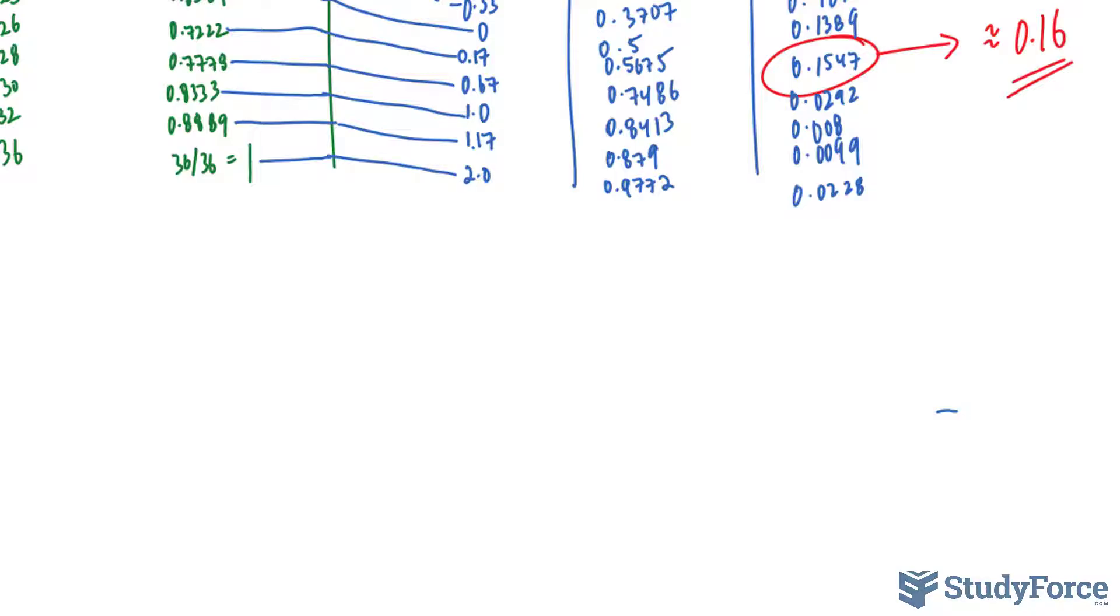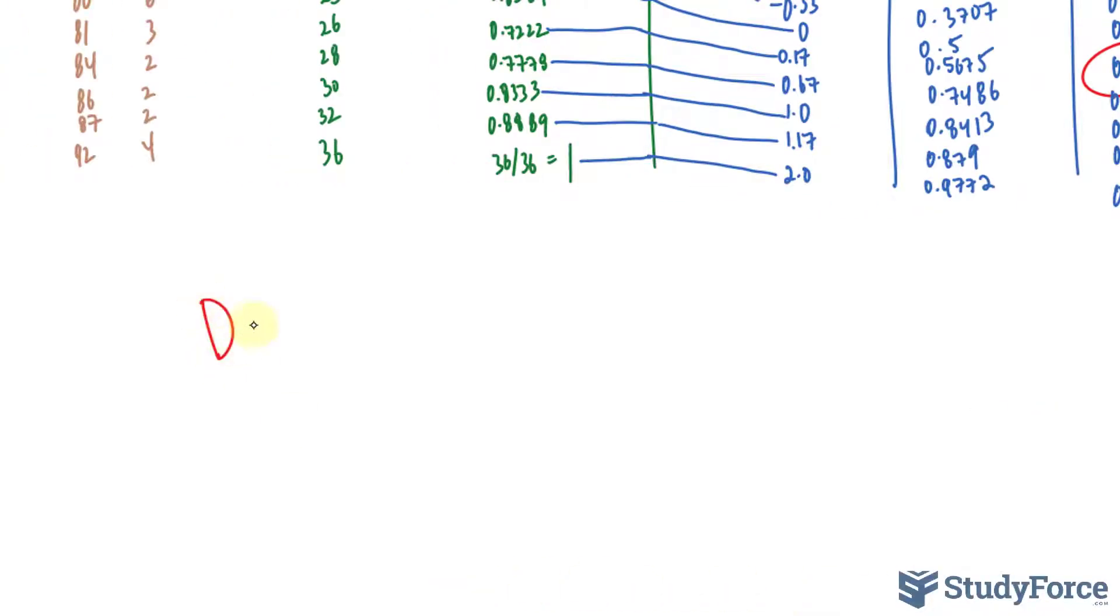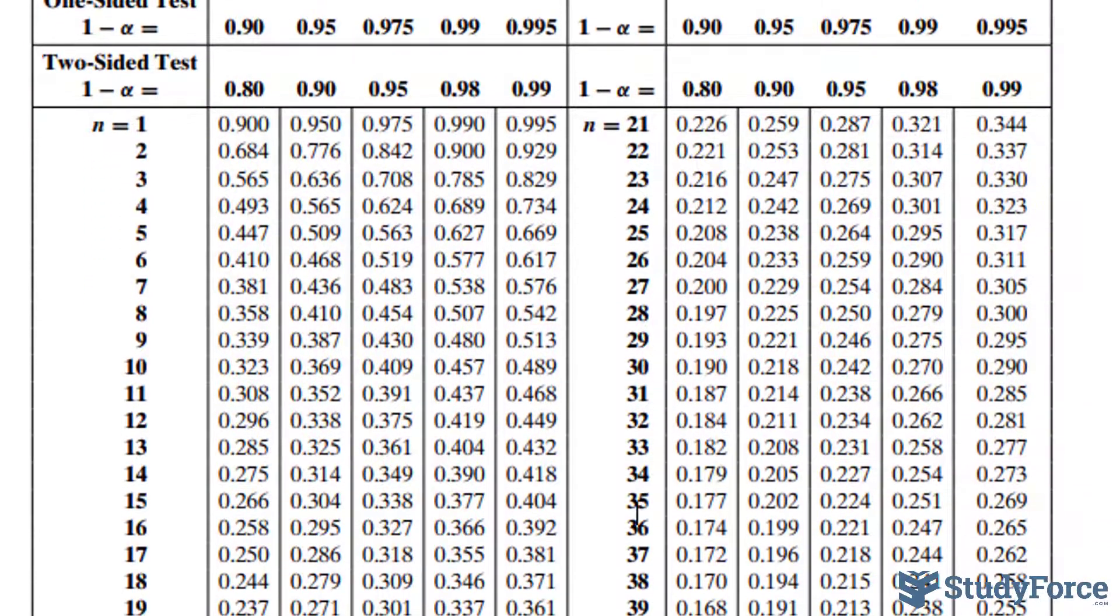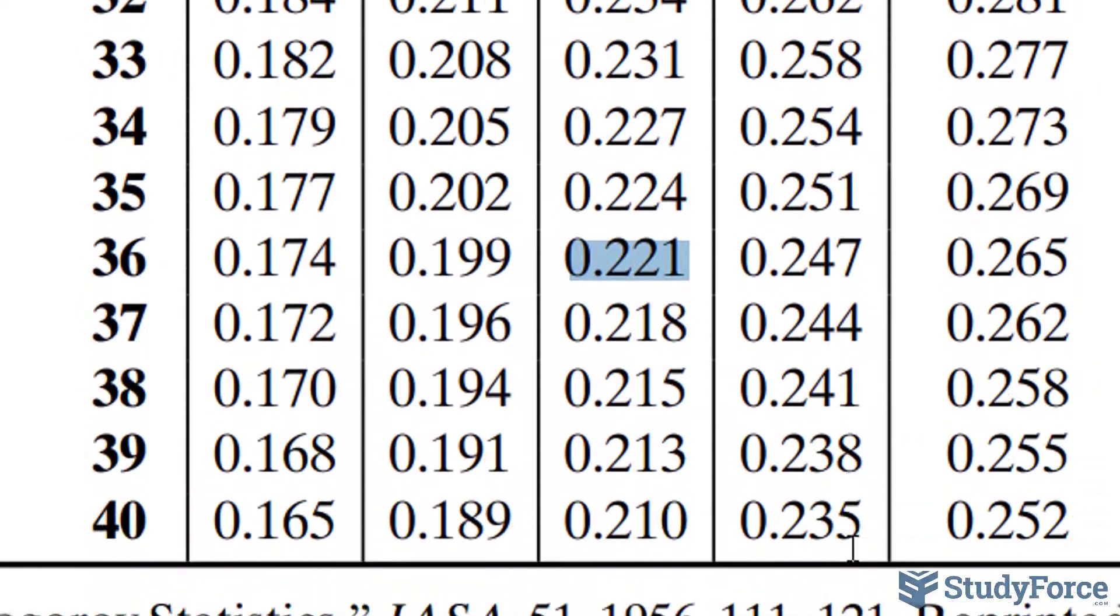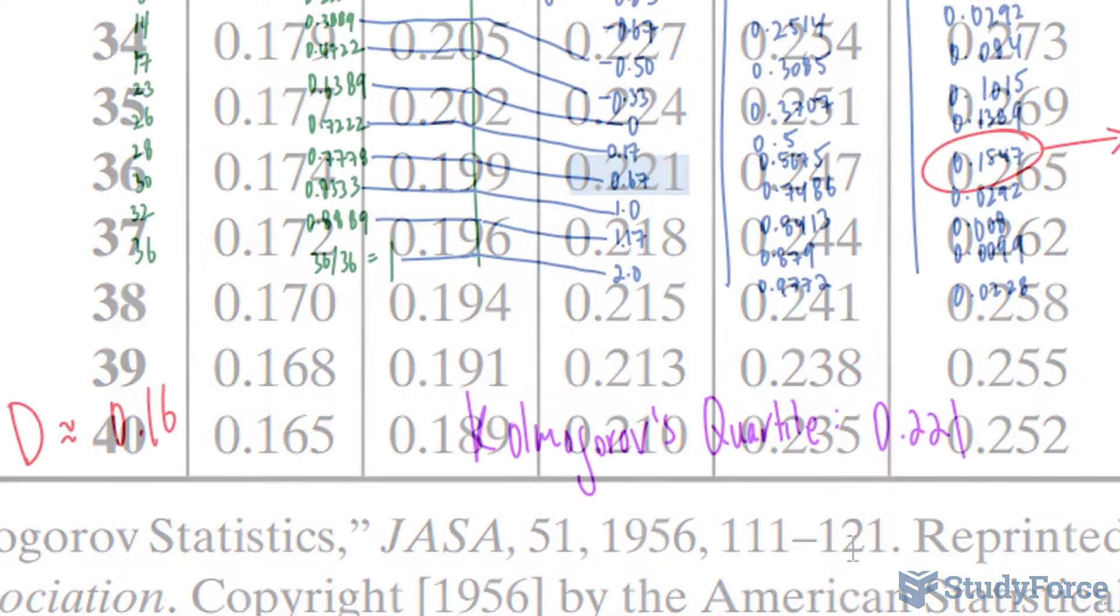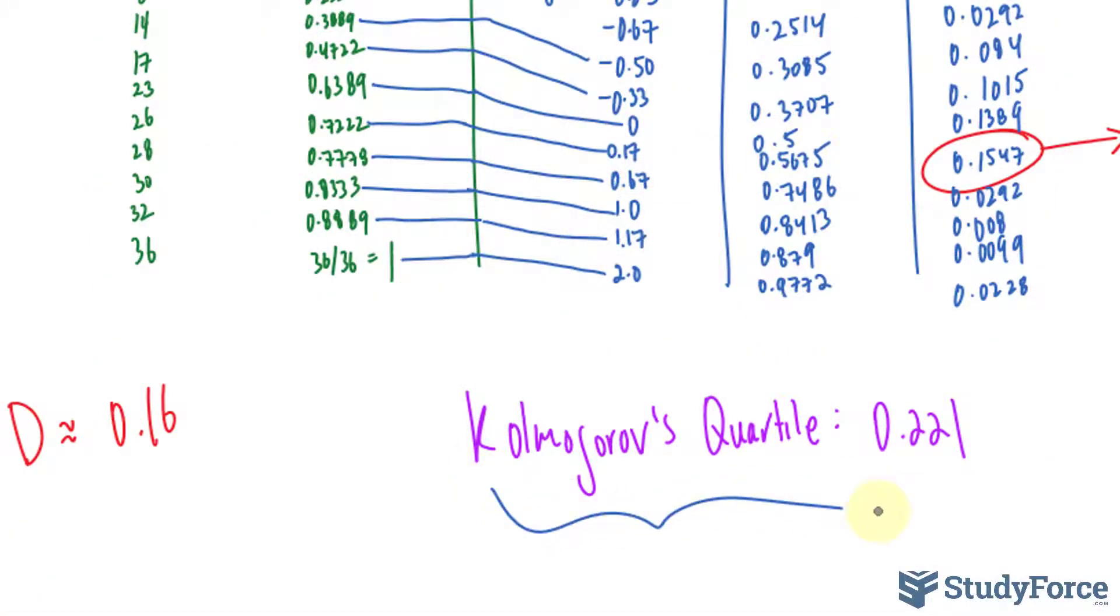Now what do we do with this value, 0.16? It is important, and here's what's next. First, you will need to locate the Kolmogorov quartile, specific for n equals 36, the total number of observations. And if you do that, you will end up with a value of 0.221. I've written this number down here for reference.